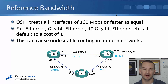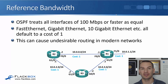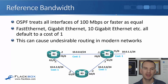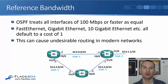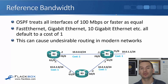There's a problem here: OSPF will treat all interfaces of 100 megabits per second or faster as equal. The best possible cost is 1 — there's no 0.1 cost. So Fast Ethernet, Gigabit Ethernet, 10 Gigabit Ethernet, 40 Gigabit Ethernet, and 100 Gigabit Ethernet will all default to a cost of 1. This can cause undesirable routing in modern networks with high-speed Ethernet interfaces.